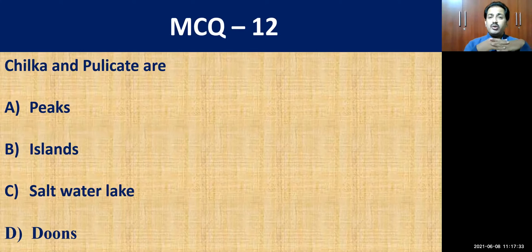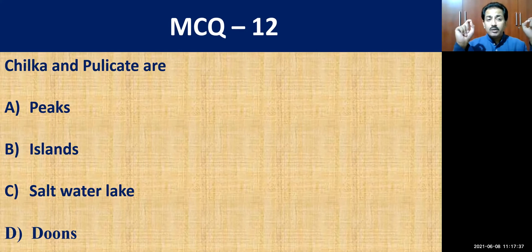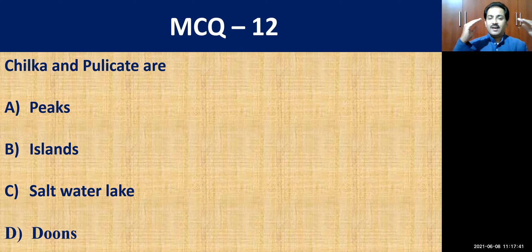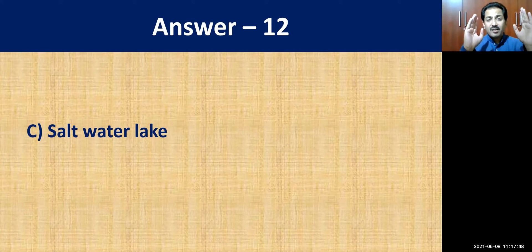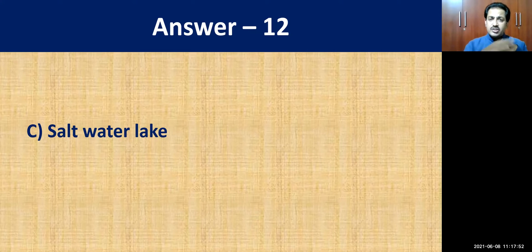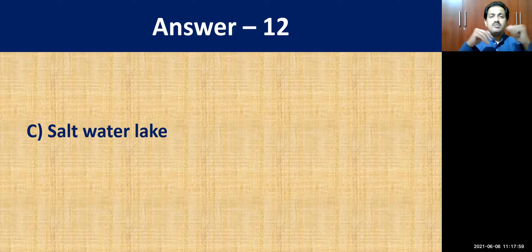MCQ question number twelve: Chilka and Pulikat — what are they? They are salt water lakes. Chilka and Pulikat are in the eastern coastal region, naturally formed and covering a vast area with seawater.